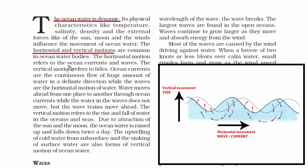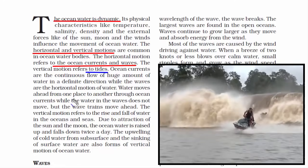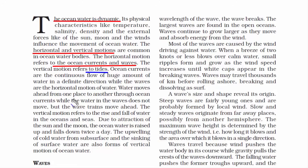Horizontal motion refers to ocean currents and waves, which move parallel to the ground. Vertical motion refers to tides — the rise and fall of sea level — which happens due to the gravitational attraction of the sun and the moon. Before we move further, let's look at some factors that influence the movement of ocean water.